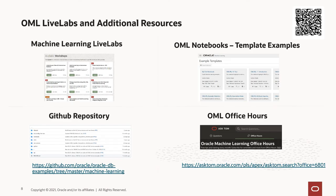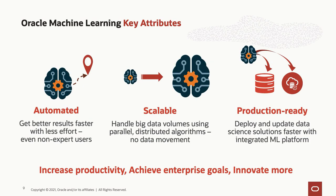To learn more, we have Oracle Machine Learning Live Labs and several different resources. There are many Machine Learning Live Labs available that you can check using the QR code. There are Oracle Machine Learning notebooks and template examples that come with the tool, a GitHub repository with all the samples available, and Oracle Machine Learning Office Hours Weekly, where several use cases are shown and everything new about OML is always covered. As a closing thought, Oracle Machine Learning has three key attributes: automation, scalability, and making it production ready — these are what OML brings to make machine learning in production a reality. Thank you for watching.